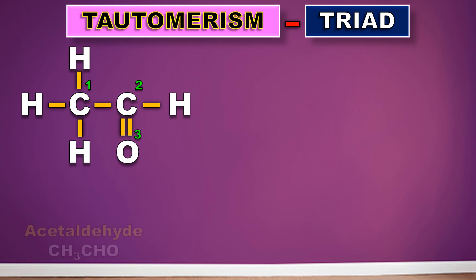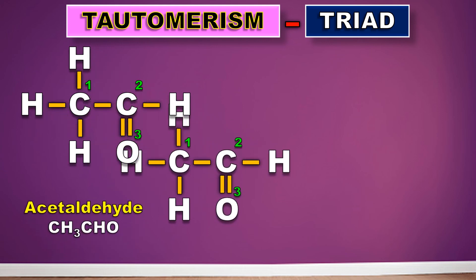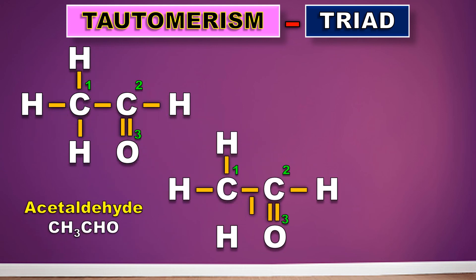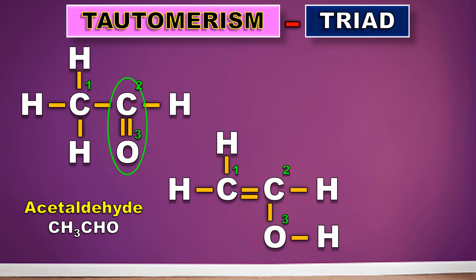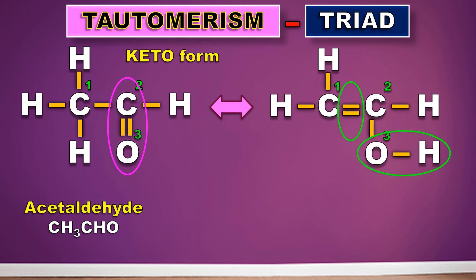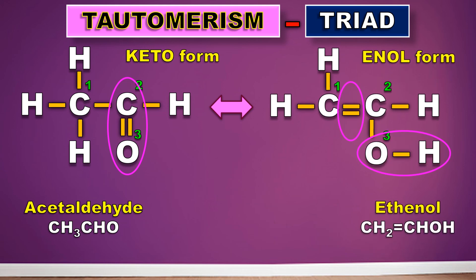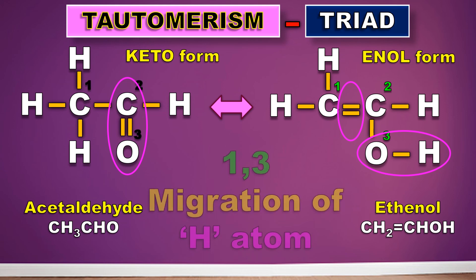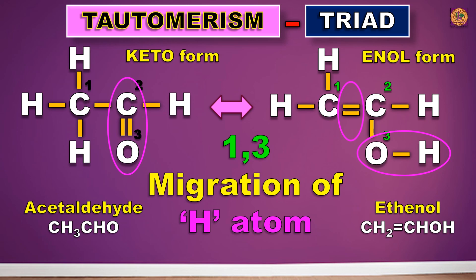The next one is the triad system, where you can see the oscillation or migration of the hydrogen atom between the first position and the third position. From the first carbon it migrates to the third position, that is the oxygen atom. Earlier it was a keto form; now there is a double bond and an alcohol, that is the enol form — otherwise known as ethenol. Since there is a migration from first to third position, it is a triad.